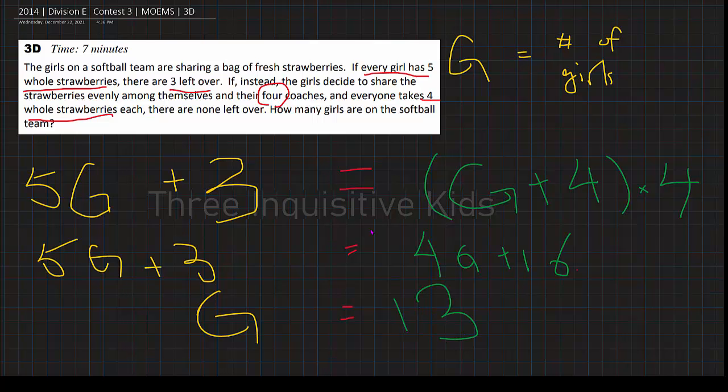So what was the question again? How many girls are on the softball team? And G is the number of girls. And G equals 13. So there we have it. The answer to this problem is 13. There are 13 girls on the softball team.